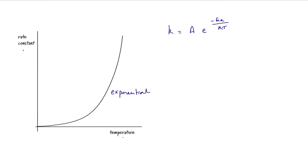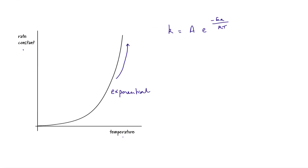The rate constant increases exponentially with temperature for a reaction, which means it's increasing faster and faster. The Arrhenius equation is telling us that the rate constant increases with increasing temperature because more colliding particles have sufficient energy to overcome the activation energy.